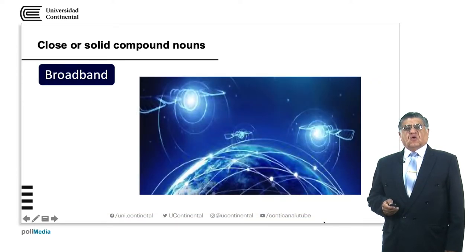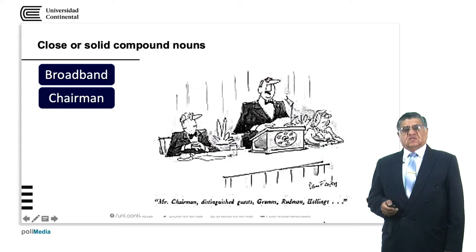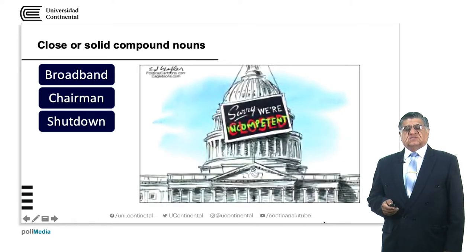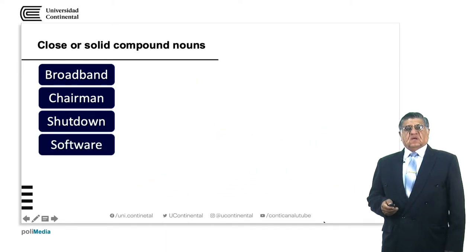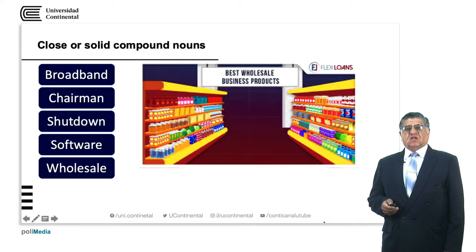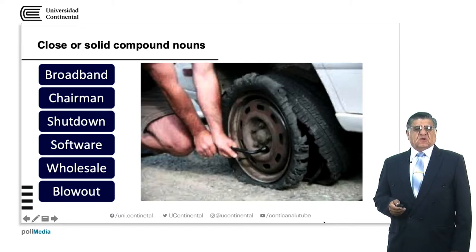We have closed or solid compound nouns. As we said, broadband means an ample band. Chairman is the leader of a meeting. Shutdown is closing something or a lack of something. We have software — any program we use in computing and communications. Wholesale is the final sale of a store. And blowout is an explosion.